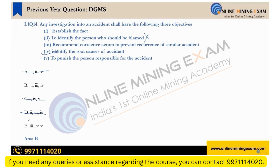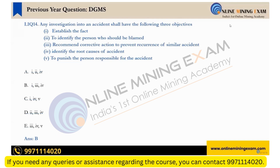Objective exams are not just about picking the right answer — they are also about eliminating the wrong answer. The important skill is ticking the right option by ruling out wrong ones. To punish the person responsible for an accident is not possible as a purpose of investigation, so 5 is not possible, and the answer will be B.